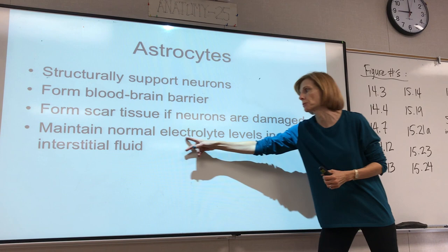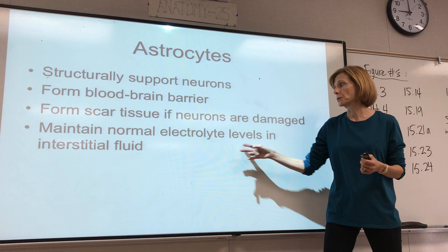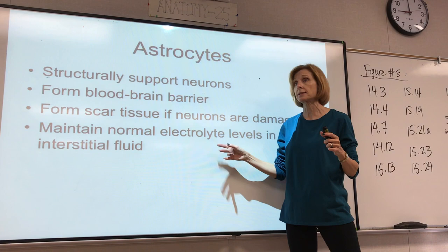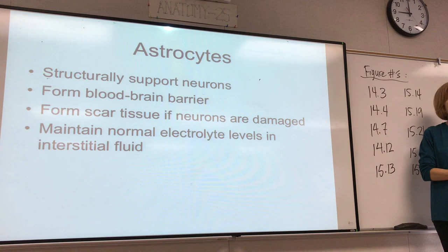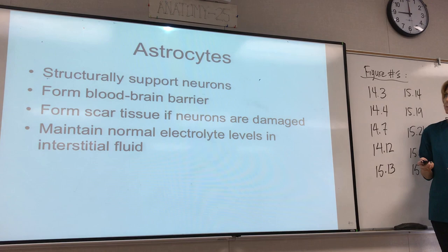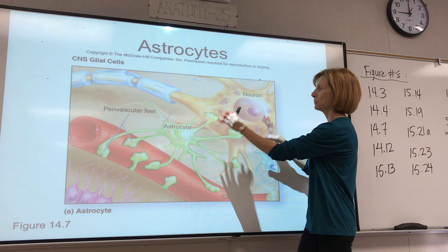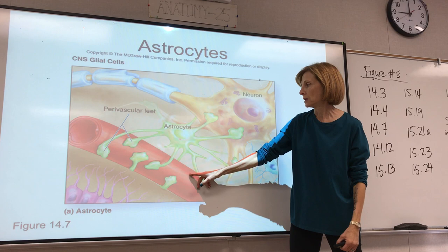Astrocytes also form scar tissue if neurons are damaged, and they help to control the electrolytes around the neurons. This is important because the action potential has to do with the movement of electrolytes or ions, so maintaining a normal balance of ions is really crucial for action potentials. You can see the astrocyte's processes helping to support this neuron, as well as wrapping around the capillary wall, forming the blood-brain barrier.